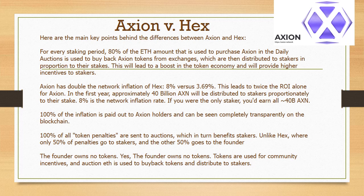Axion has double the network inflation of HEX — 8% versus 3.69% — which leads to twice the ROI alone. In the first year, approximately 40 billion AXN will be distributed to stakers proportionately to their stake. 8% is the network inflation rate; if you were the only staker, you'd earn all 40 billion AXN. 100% of the inflation is paid out to Axion holders and can be seen completely transparently on the blockchain. 100% of all token penalties are sent to auctions, which in turn benefits stakers — unlike HEX, where only 50% of penalties go to stakers and the other 50% goes to the founder.